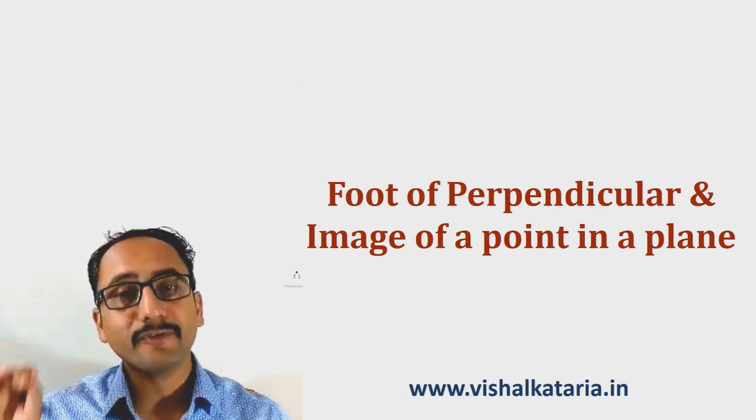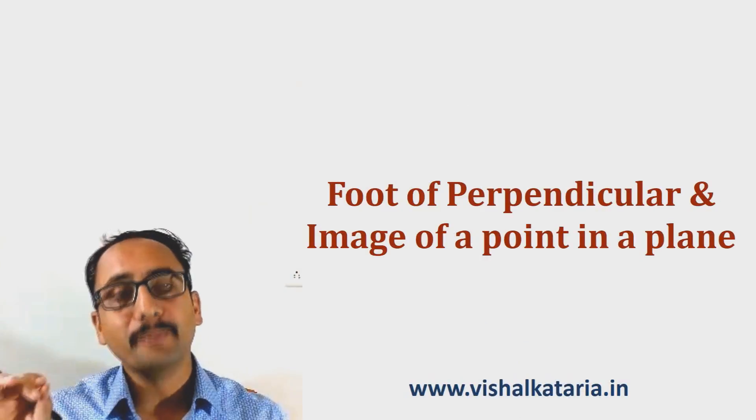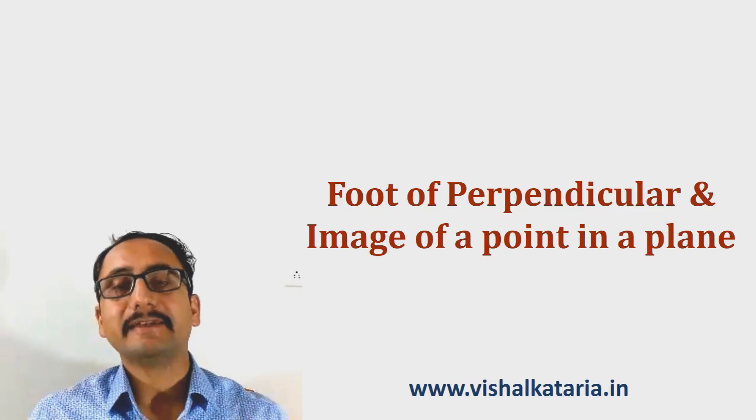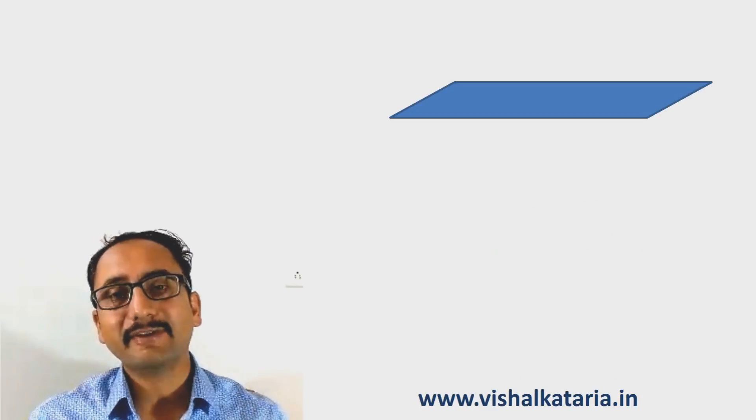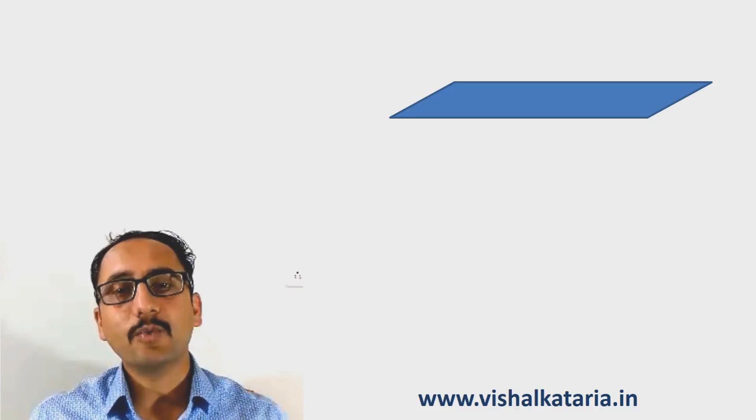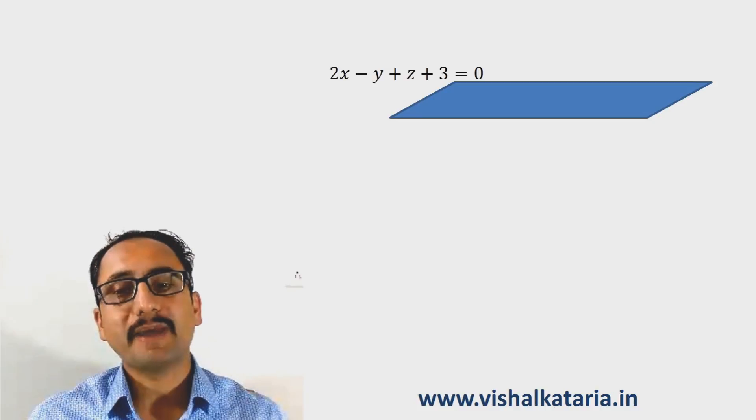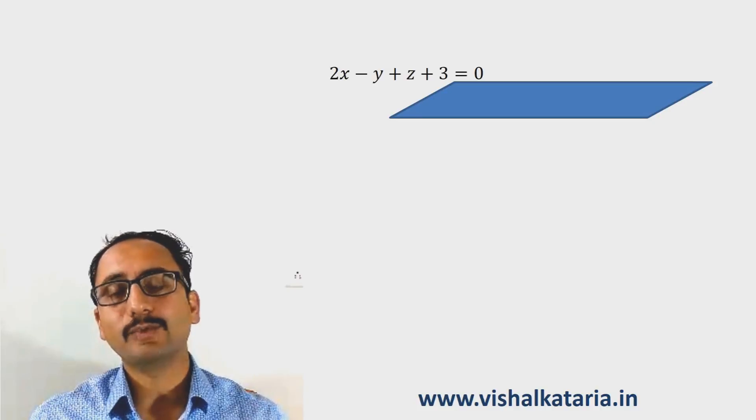Hi, welcome back. In the previous video, we discussed how to find the image of a point in a line. In this video, we are going to discuss how to find the image of a point and foot of perpendicular of a point in a plane. Let's consider a plane whose equation is 2x - y + z + 3 = 0.